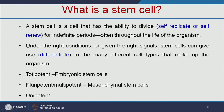Stem cells are divided into three types: totipotent, pluripotent, and unipotent. Totipotent cells are embryonic stem cells — from them, we can get any kind of cell. Multipotent cells, for example mesenchymal stem cells, can give rise to multiple types of cells. Unipotent cells can only give a single type of cell.